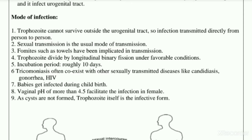The trophozoite cannot survive without the host, so the infection is usually transmitted directly from person to person. Sexual transmission is the usual mode of transmission — there is roughly a 90% chance of transfer if no precautions are taken. Transmission via fomites such as towels has been implicated but chances are very low.